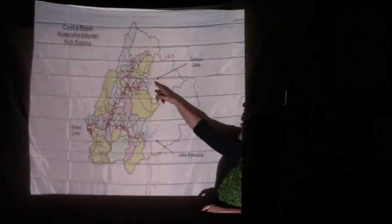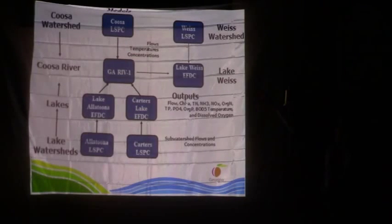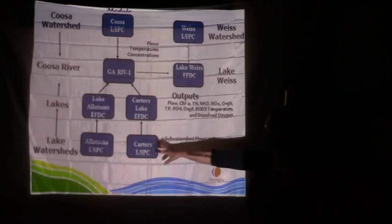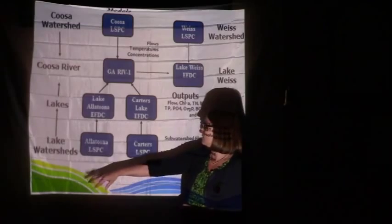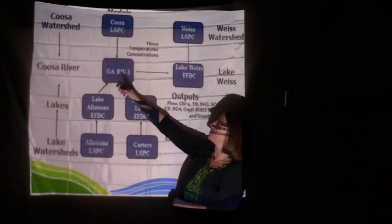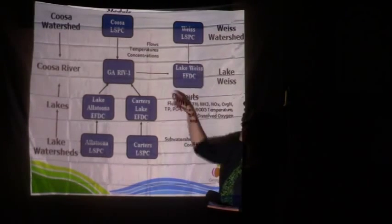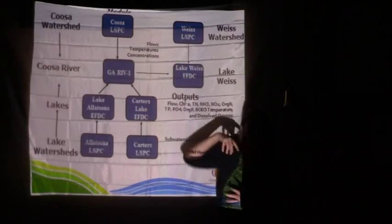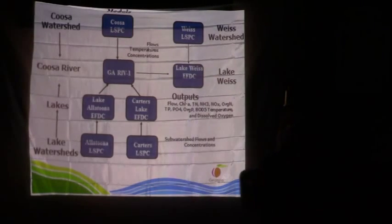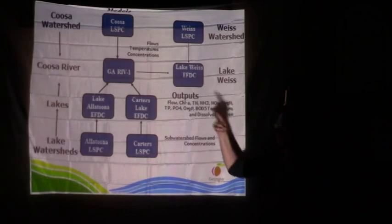For the Coosa system, which had two lakes, we did watershed models through Lake Altoona and Lake Carters, dealing with state-line issues. The complexity was significant: I had watershed models for Altoona that went into lake models that became boundary conditions for my RIV-1 model, which then went into a Lake Weiss model with surrounding watersheds. Eighty-five percent of the watershed draining into Lake Weiss is in Georgia. So guess who's going to have to fix the problem in Lake Weiss — it's not Alabama, it's basically Georgia.